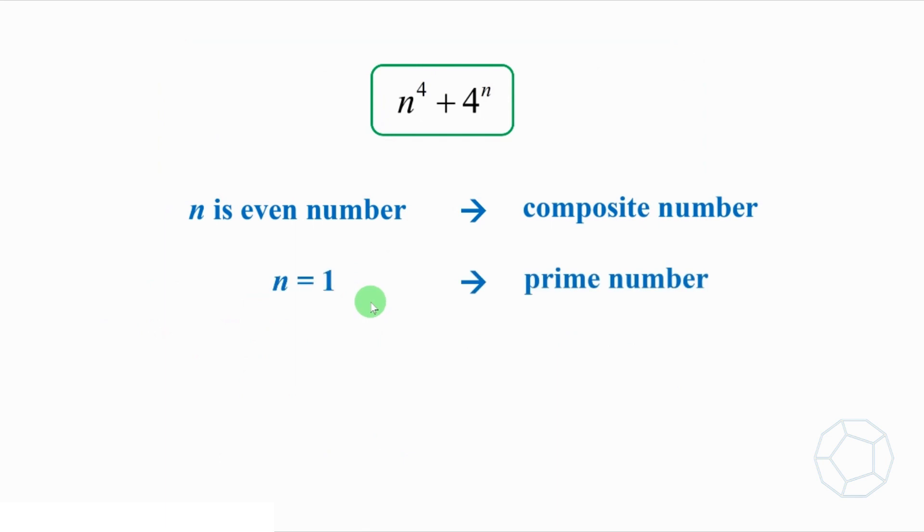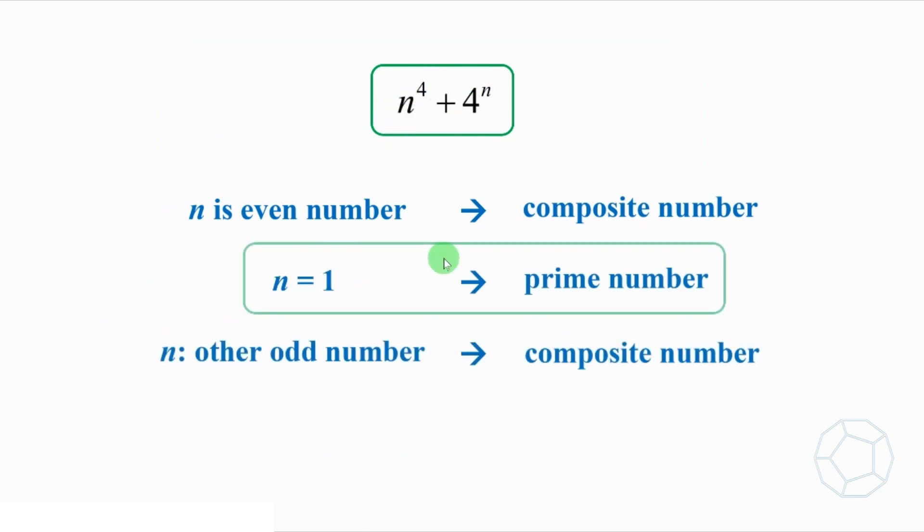After considering all possibilities, we get that n to the power of 4 plus 4 to the power of n is prime, only when n equals 1. We can see the power of logical argument to solve this challenging problem.